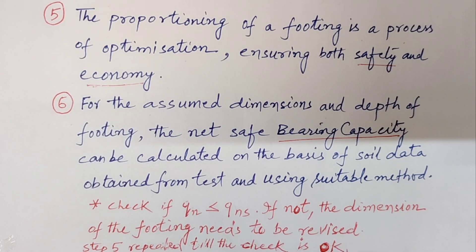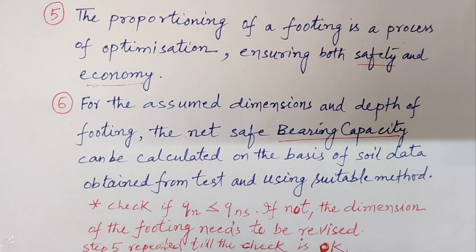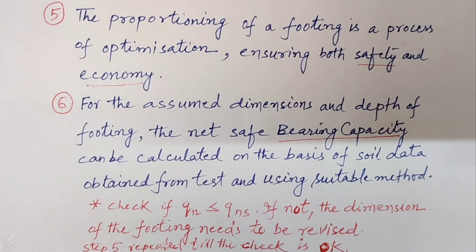On the other hand, if Qn is very much less than the net allowable bearing pressure, the design is over-safe and hence uneconomical. That is why the proportioning of a footing is a process of optimization ensuring both safety and economy. Since net allowable pressure is the smaller of net shape bearing capacity for shear and the shape bearing pressure for settlement, both considerations must be factored into the design.